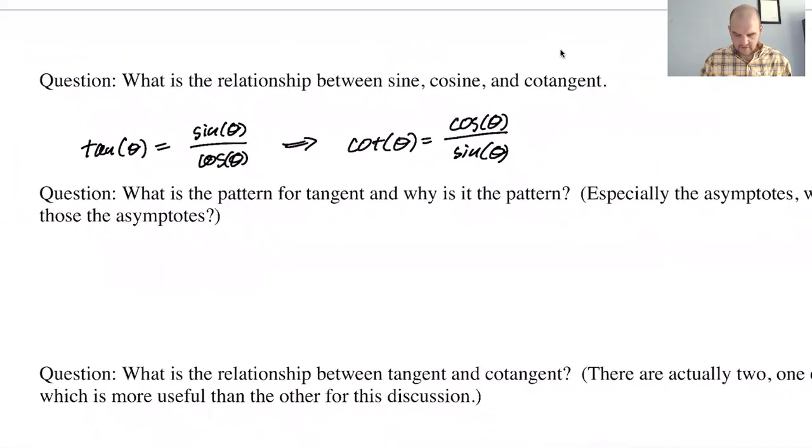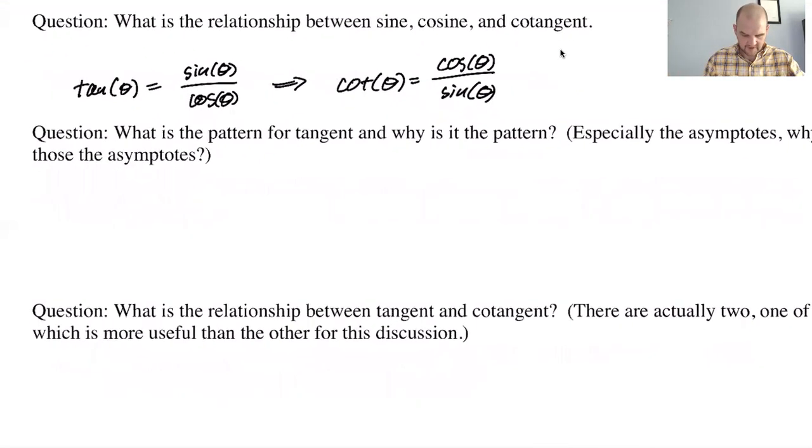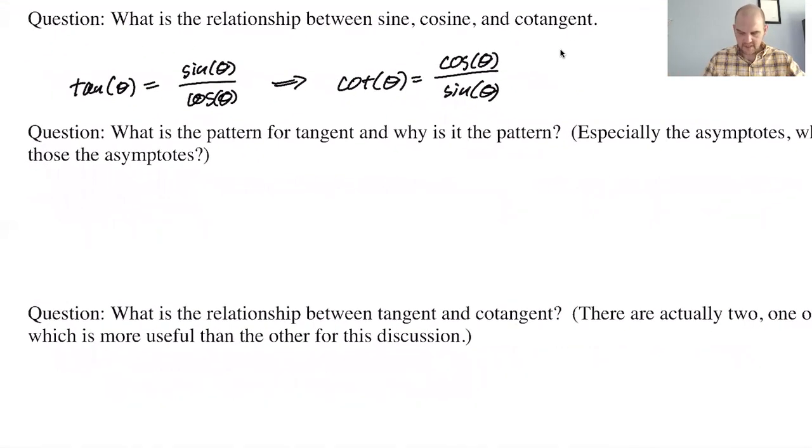If you could learn a small number of things and then generalize them, that's better than trying to learn a very large number of non-generalized things. So what is the pattern for tangent, and why is it the pattern?